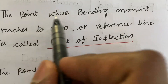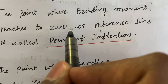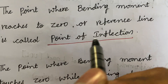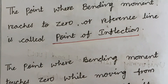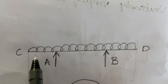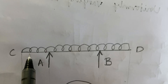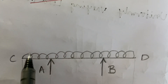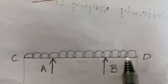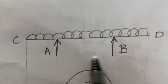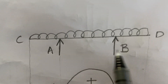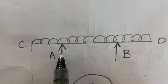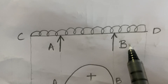The point where the bending moment reaches zero, or the reference line, is called the point of inflection. I have taken into consideration a uniformly distributed load overhanging beam with two supports — two reaction forces A and B.